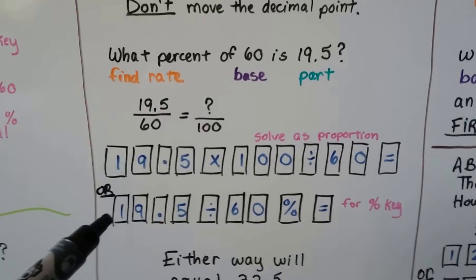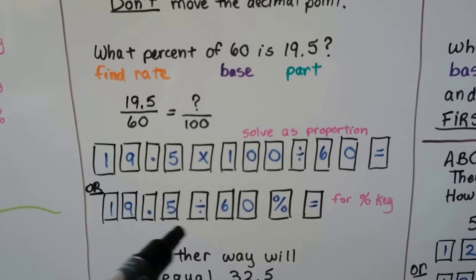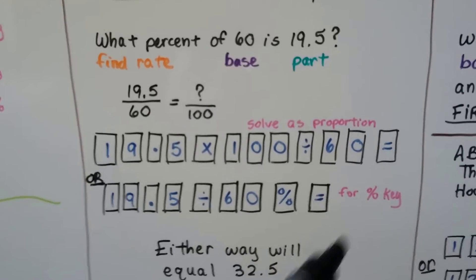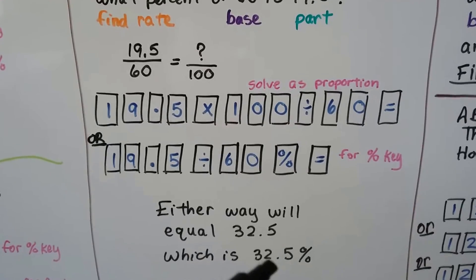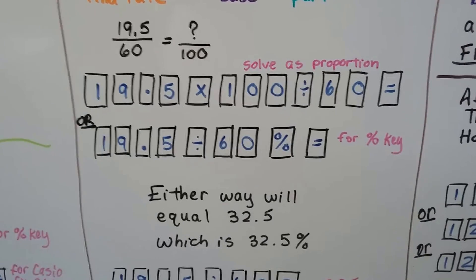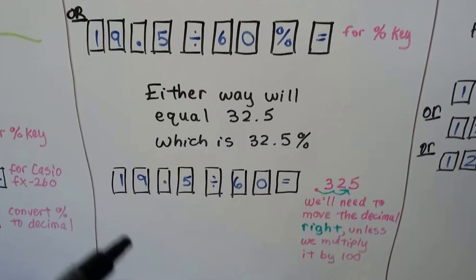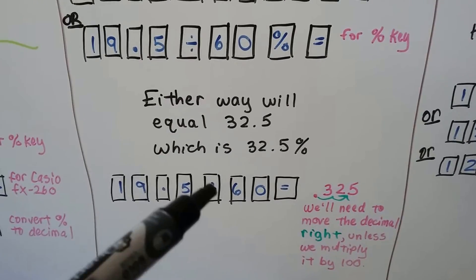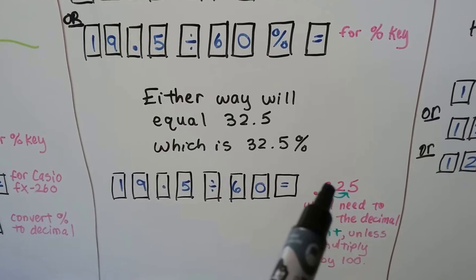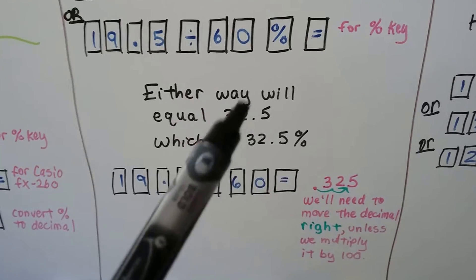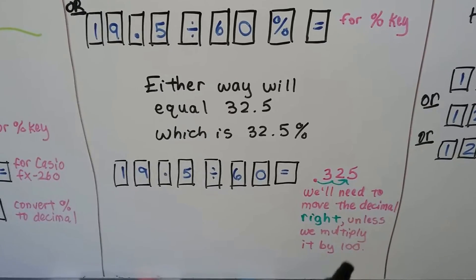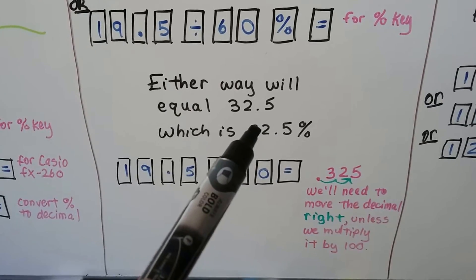If it's got a percent key, we can hit 19.5 divided by 60 percent key equals. And either way, it's going to give us 32.5, which is 32.5 percent. We just put the percentage sign on.